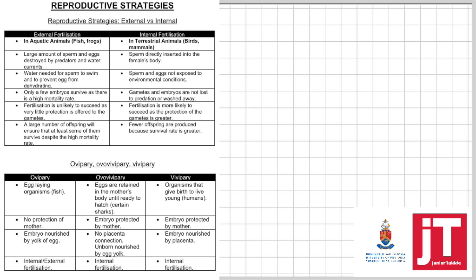Let's look at reproductive strategies. External fertilization takes place in aquatic animals such as fish and frogs. A large number of eggs are produced because eggs and sperm are destroyed by predators and water. Water is needed for the sperm to swim and to prevent eggs from dehydrating. Only a few embryos survive as there is a high mortality rate. Fertilization is unlikely to succeed as there is very little protection for the gametes. Internal fertilization: the sperm is directly inserted into the female's body. Sperm and eggs are not exposed to environmental conditions. Gametes and embryos are not lost to predation or washed away. Fertilization is more likely to succeed and fewer offspring are produced because the survival rate is greater.